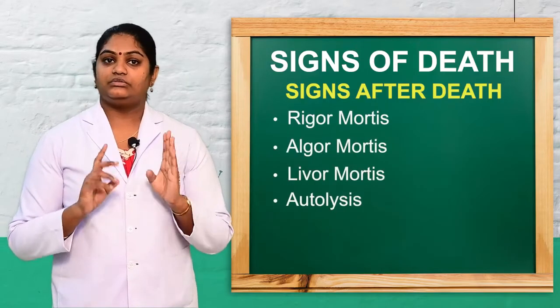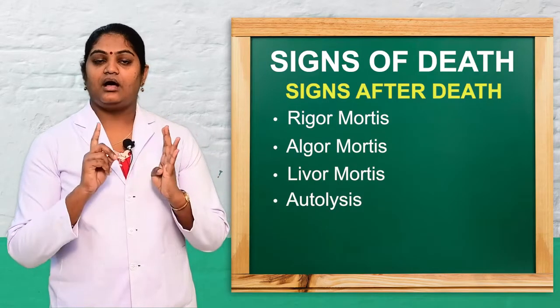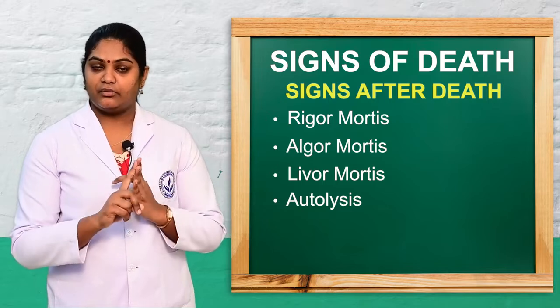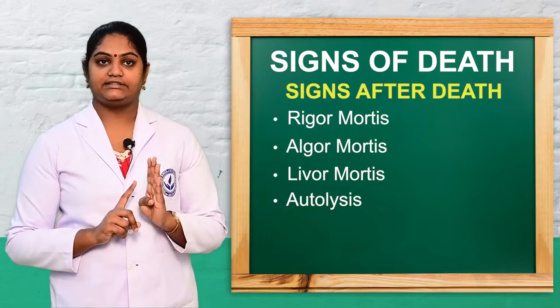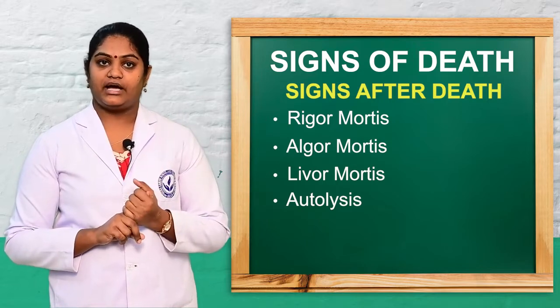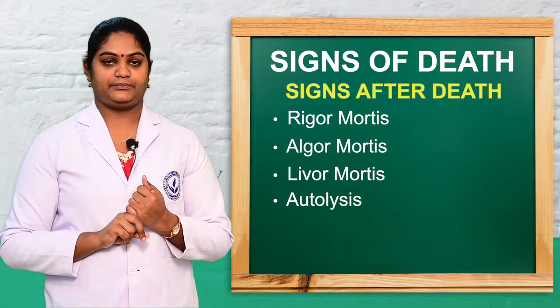So these are the four main signs after death: rigor mortis, algor mortis, livor mortis, and autolysis.